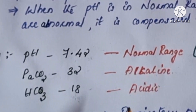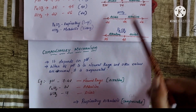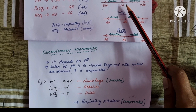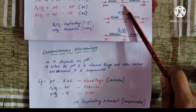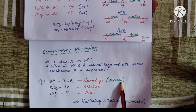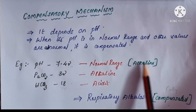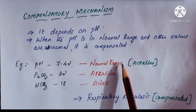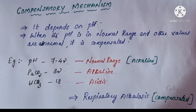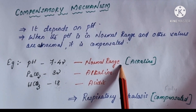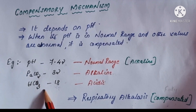First we need to identify the primary condition. On the scale, 7.42 is slightly above the mean of 7.4, so it is slightly alkaline. The pH is in the alkaline direction, and PaCO2 is also alkaline — so the primary condition is respiratory alkalosis. Since the pH is in the normal range and both other values are altered, we can call it fully compensated.